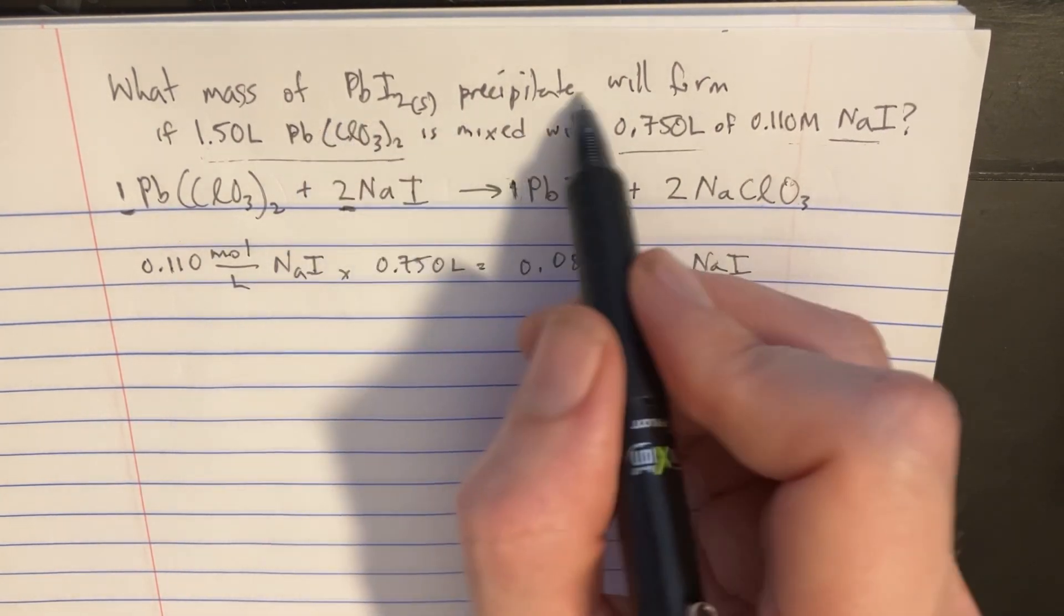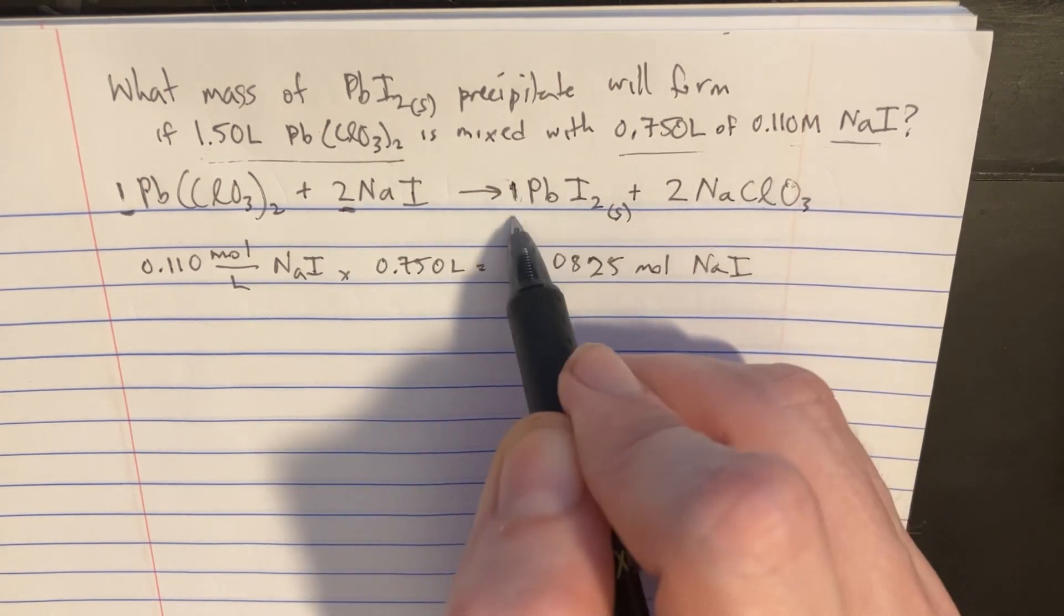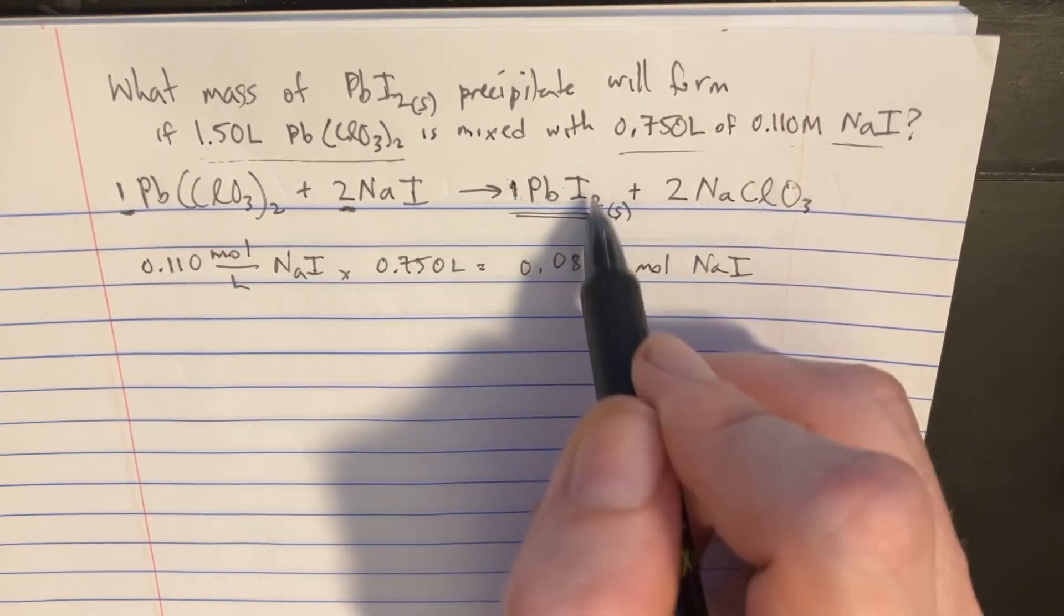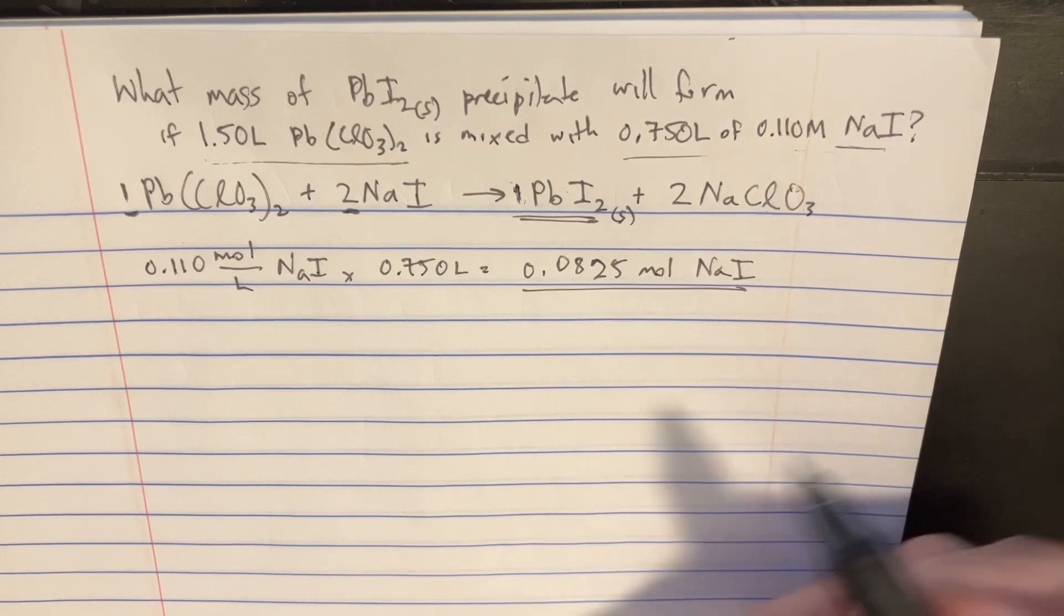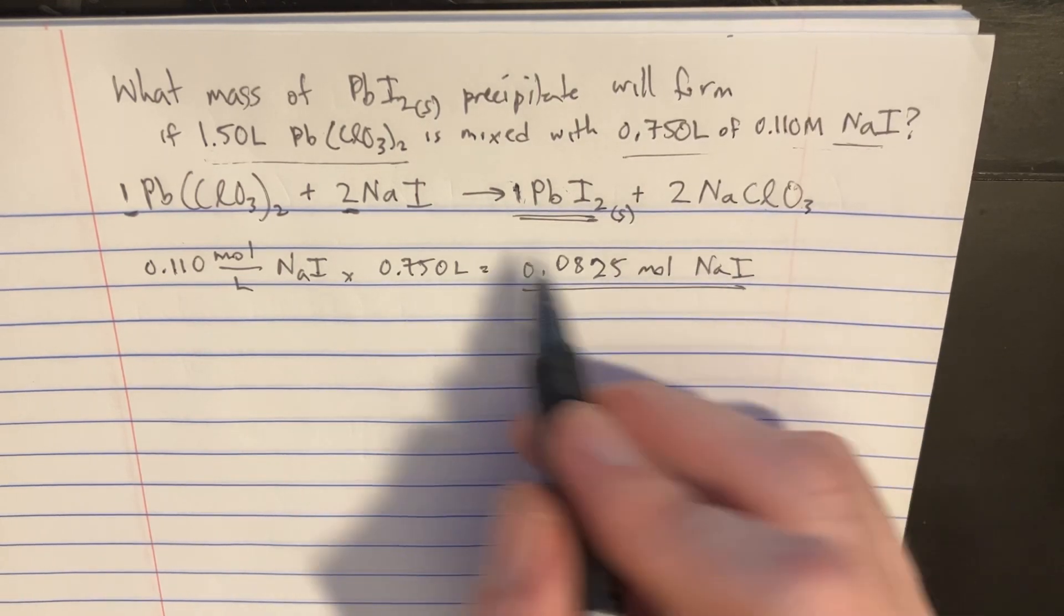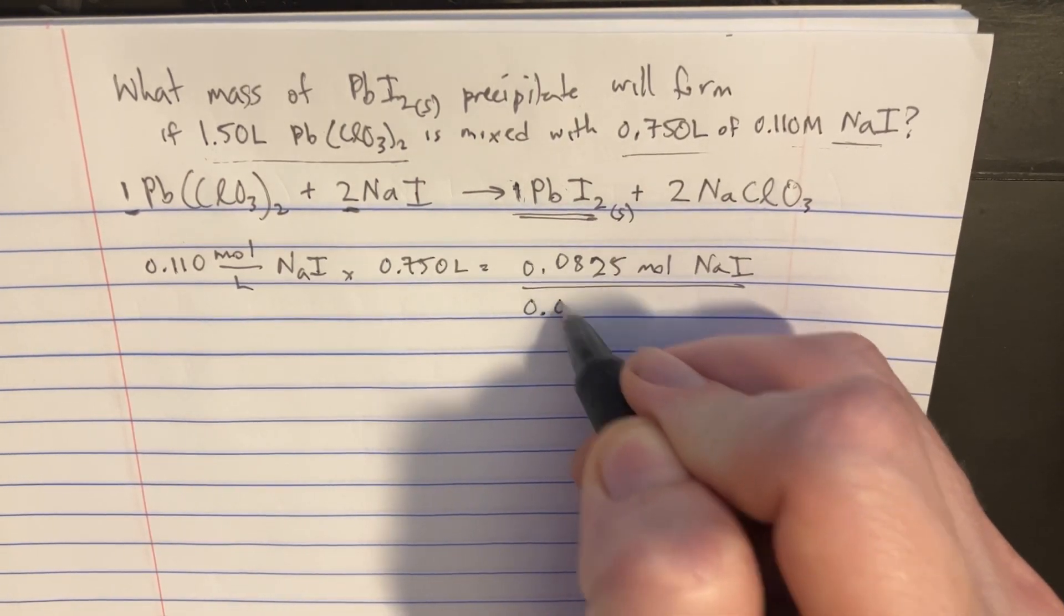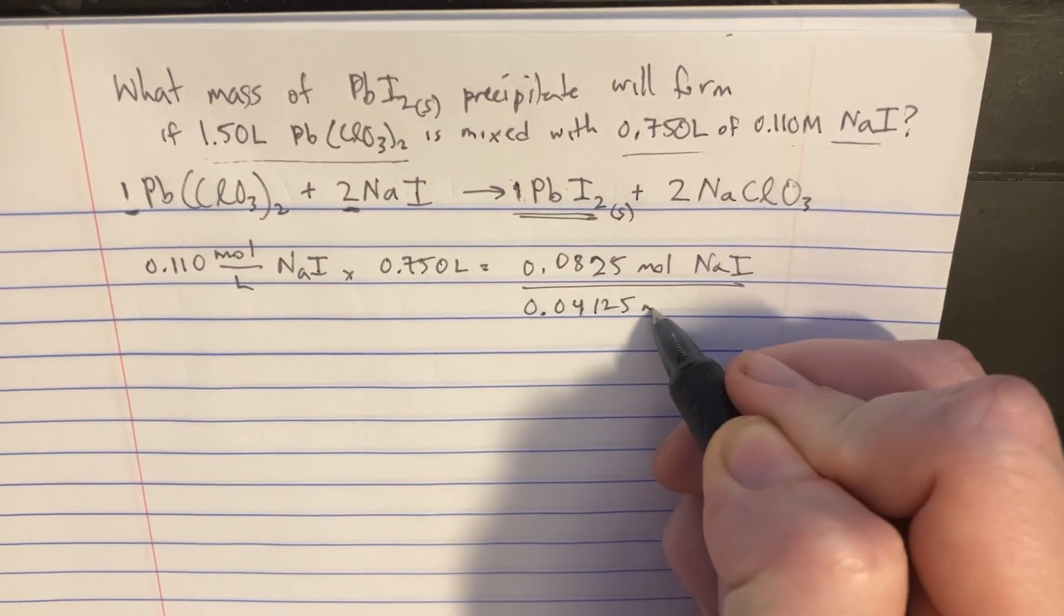So since we're trying to figure out the precipitate that will form, we're going to want to figure out how many moles of this has formed based off of how many moles we have here. So since it's a two-to-one ratio, this should be 0.04125 mole.